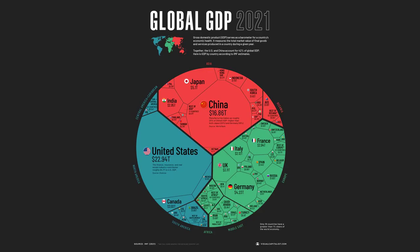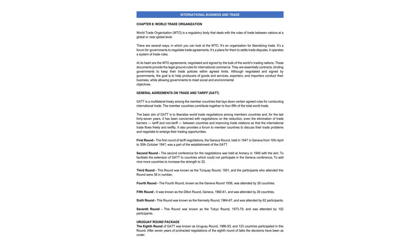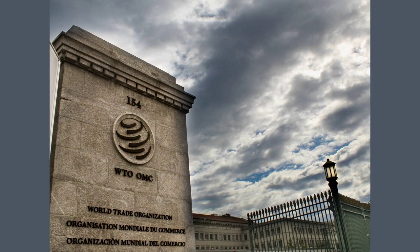In the following years, the GATT faced new challenges as the global economy became increasingly complex. The Uruguay Round, which spanned from 1986 to 1994, aimed to address emerging issues such as intellectual property rights, services trade, and agriculture. This round resulted in the creation of the World Trade Organization, which replaced the GATT as the governing body for international trade.